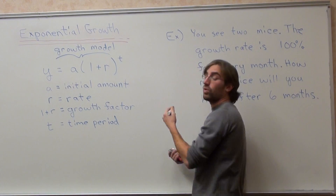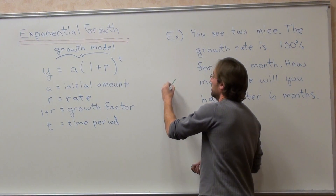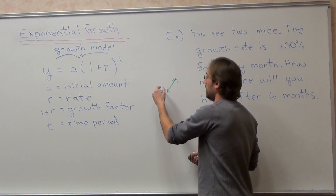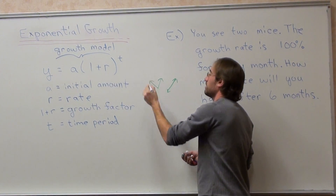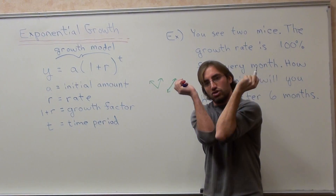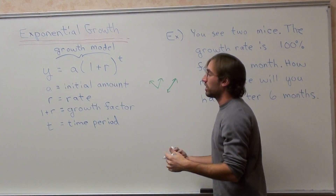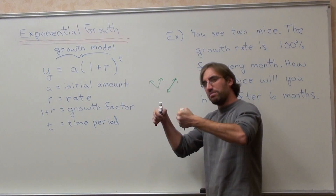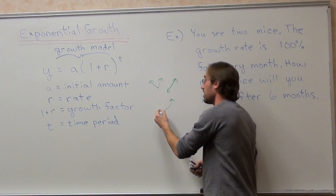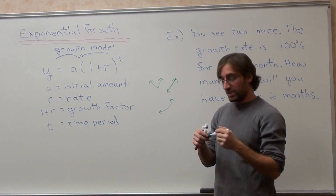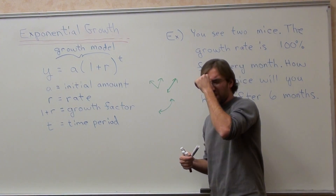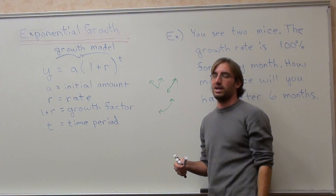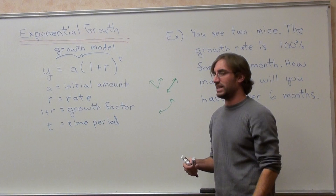We've been working with particular types of functions — linear functions, which are straight lines, and absolute values, which are two straight lines joined at a vertex. Now we're going to focus on functions kind of like linear, except they have a bend in them and they generally rise faster than regular linear functions. It depends which linear function you're comparing to, but eventually exponential will overtake the linear — at some point, it's guaranteed.